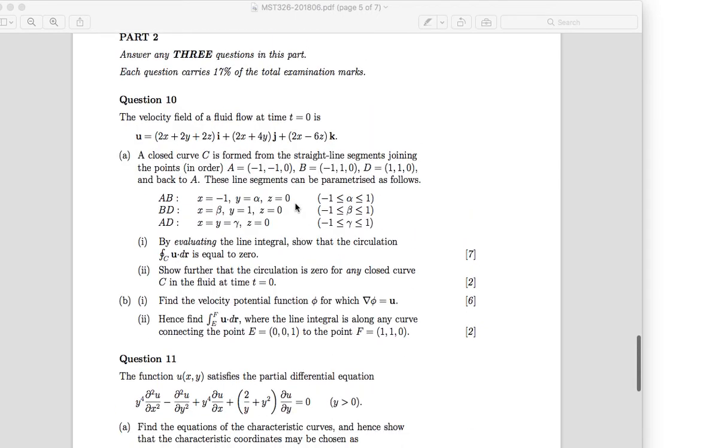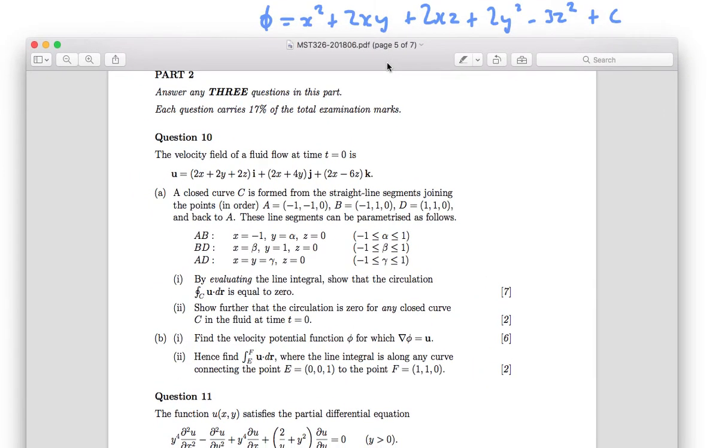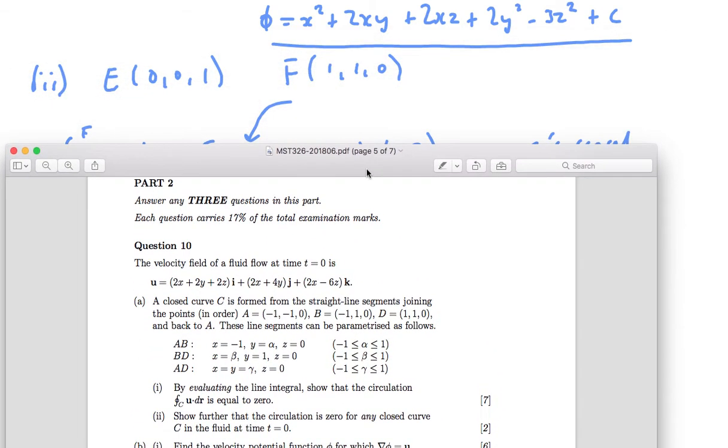So we just put the values 0, 0, 1, x, y, z, and 1, 1, 0 into it. So that's the function itself we've just figured out. And then there are our values, so we're just going to put them in there.